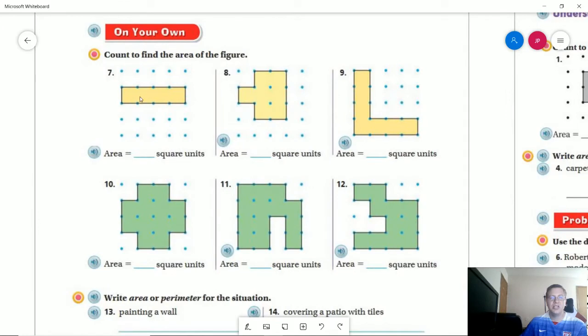Number seven, all we need to do is just count across. That would give us one, two, three, four square units. Number nine - one, two, three, four, five, six, seven square units. Number eleven - one, two, three, four, five, six, seven, eight, nine, ten, eleven, twelve, thirteen.